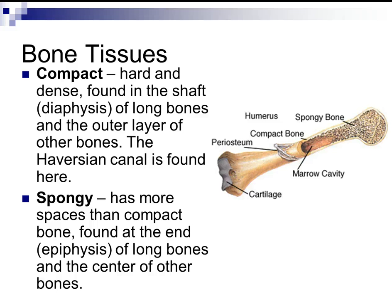Spongy bone has more space than compact bone. It is found at the end — the epiphysis — of long bones and at the center of other bones. So spongy bone is at the ends and outer regions, while compact bone is in the middle shaft of the long bone.